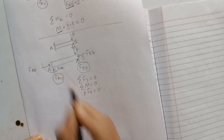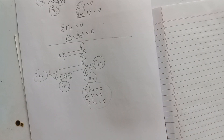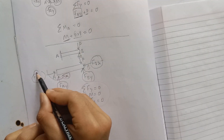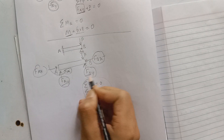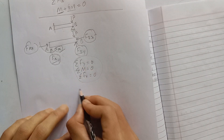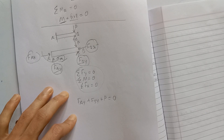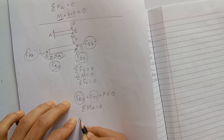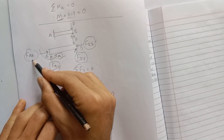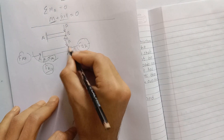We now have our variables. The unknowns are the support reactions. Writing the moment equation: summation of moment about A equals zero. We get F_BY multiplied by L, plus the moment due to load P at its position, equals zero. So F_BY into L plus P into its distance equals zero.